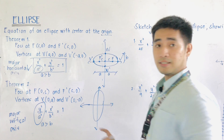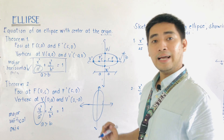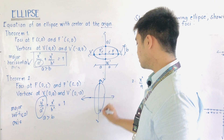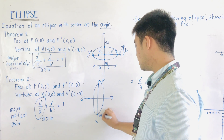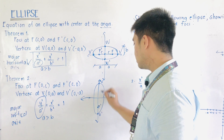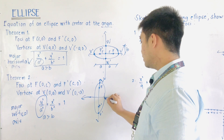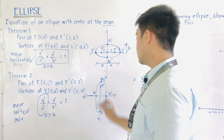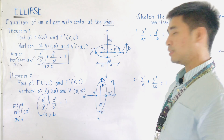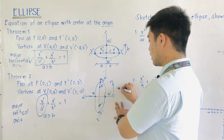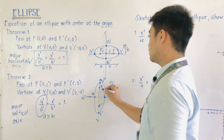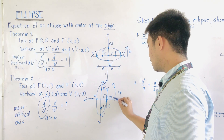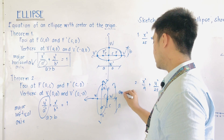For a vertical ellipse under Theorem 2, the major axis is vertical. We have V at the top and V prime at the bottom, F prime and F along the vertical axis, and W and W prime on the horizontal. The distances from the center: A goes to the vertices vertically, C goes to the foci, and B goes to the co-vertices.